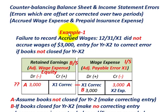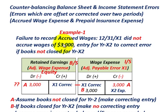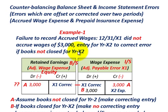Let's start with our accrued wage expense for example one. This is the case where we have a failure to record accrued wages at the end of year 12/31/X1 — we did not accrue wages of $3,000. We're going to look at the correcting entry for year X2 where the books are not closed, and also how we'd handle it if the books are closed. We'll need to make adjustments to retained earnings on the balance sheet and to wage expense on the income statement.